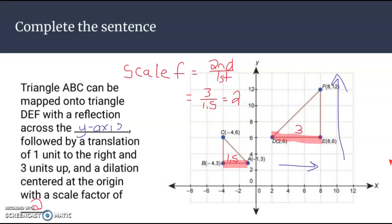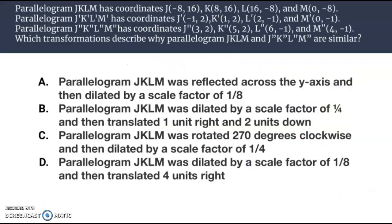And then finally, we have a double transformation. Let's read through it here. Parallelogram JKLM has these coordinates. Parallelogram J'K'L'M' has these coordinates. And parallelogram J"K"L"M" has these coordinates here. Which transformation describes why parallelogram JKLM and J"K"L"M" are similar? Here's all possible, so it's a big multiple choice question here.